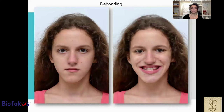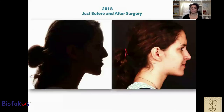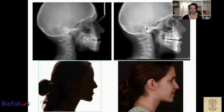She had spent a year in treatment with no results — in fact, she was worsening. So we did bonding and made a new treatment plan. Because she had many periodontal problems, she started to have root resorption, very bad hygiene, and gum inflammation. We decided to accelerate treatment and combine orthodontic treatment with orthognathic surgery. In 2018, we can see a picture just before and immediately after surgery. A year later, when we finished treatment, you can notice the difference.